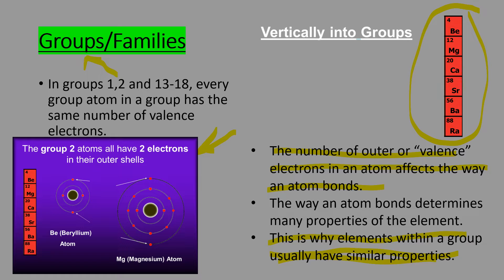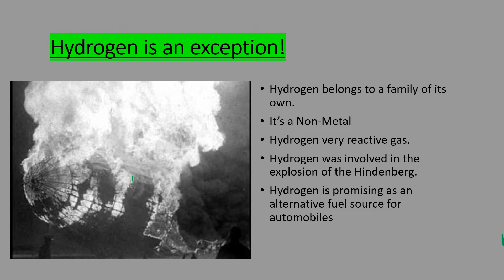Valence electrons are what contribute to the chemical properties of an element, and when elements have the same number of valence electrons, they have the same chemical properties. Now, hydrogen is in group 1; however, hydrogen is not part of the alkali metals family — hydrogen is its own family. It's hanging out in group 1 with the alkali metals because it only has one valence electron, so it fits in that group. But hydrogen is its own little thing, its own family.